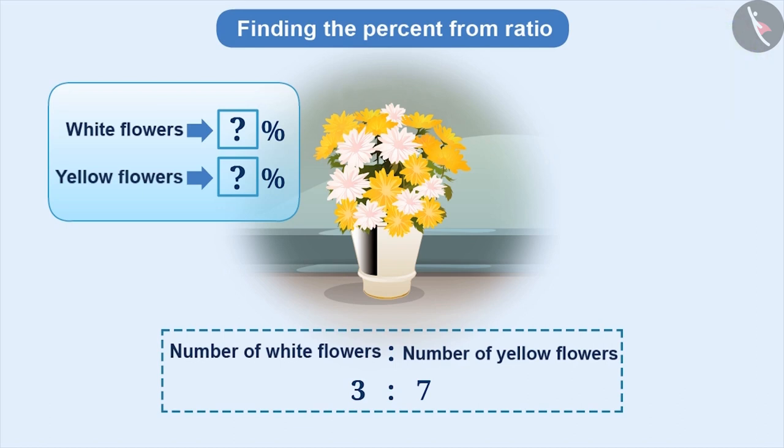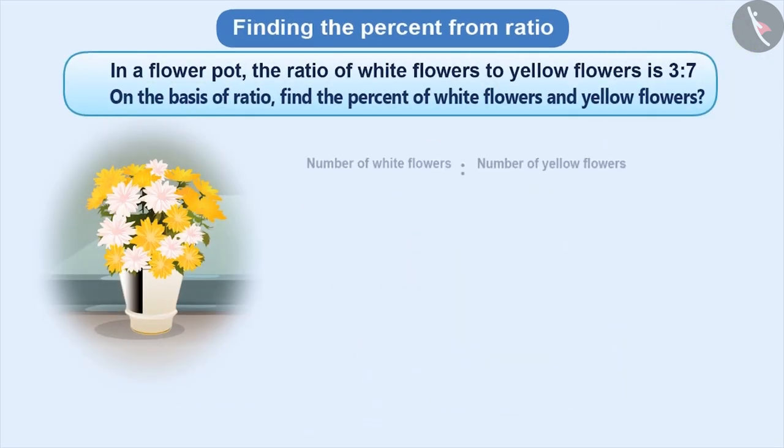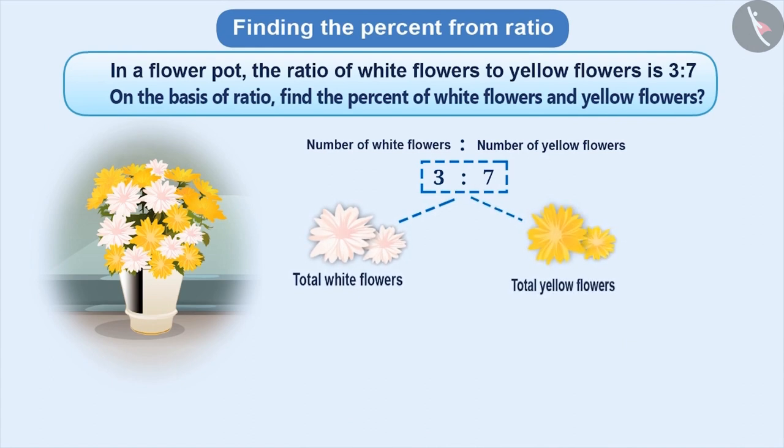Let me tell you, we cannot get the actual number of objects with the ratio. But, we can find the total number of parts of each object.